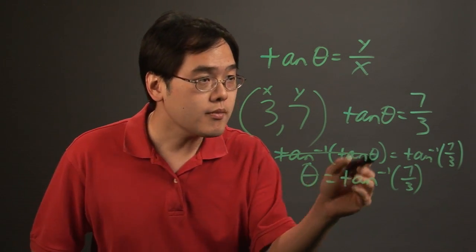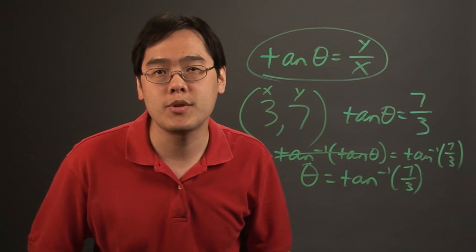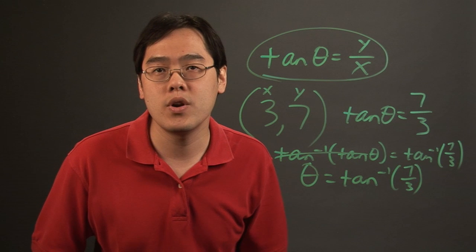So as long as you use this particular formula and take the arctan of both sides, you should be good to go. So I'm Jimmy Chang, and that's how to convert coordinates to angles.